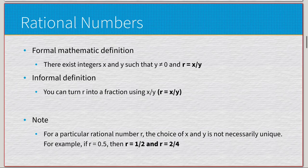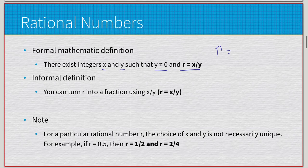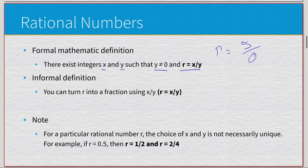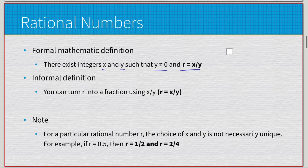We also have a definition for rational numbers. The formal definition: there exist integers x and y such that y ≠ 0 and r = x/y. For example, r = 5/4 uses integers 5 and 4, and y ≠ 0 because division by zero would be problematic. Informally, a rational number can be turned into a fraction x/y. For a particular rational number, the choice of x and y is not necessarily unique — for example, 0.5 can be written as 1/2 or 2/4.